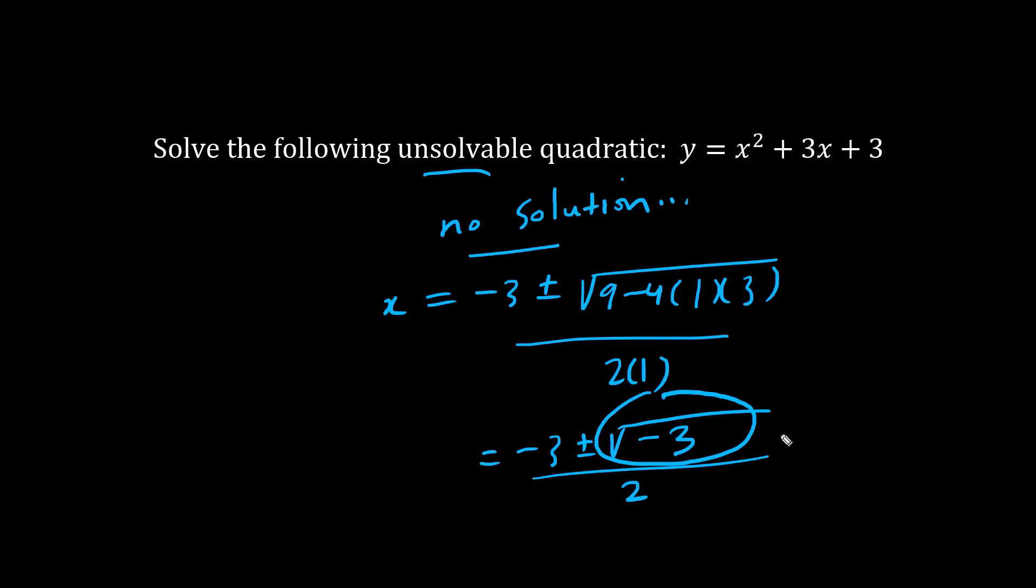Now for enrichment we can rewrite this square root of negative 3 as the square root of negative 1 times the square root of 3. And this by definition is an imaginary number i. So although there's no real solution we could write that x equals minus 3 plus minus root 3i all over 2.